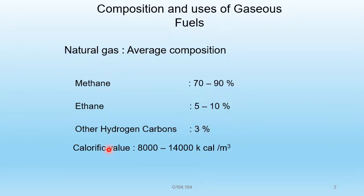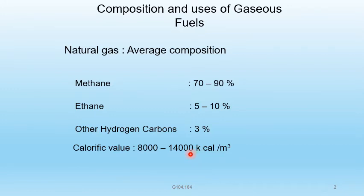The calorific value of natural gas is 8000 to 14000 kilocalories per meter cube. Calorific value is defined as the quantity of heat liberated by the complete combustion of unit weight or volume of the fuel.